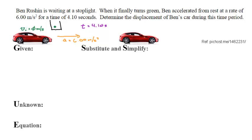Ben Rushen is waiting at a stoplight. When it finally turns green, Ben accelerates from rest at a rate of 6.00 meters per second squared for a time of 4.10 seconds.